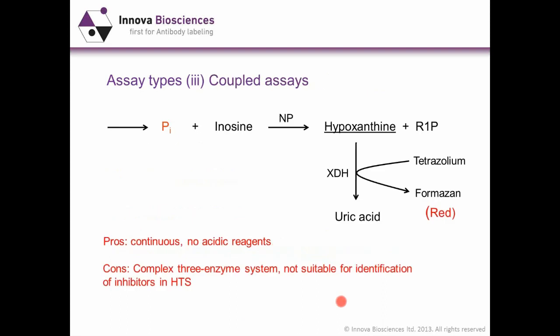The third assay type is coupled assays. Phosphate is generated from a reaction, then reacted with another molecule — for example, inosine, which is converted by nucleoside phosphorylase to hypoxanthine, which in turn is converted into uric acid. Concomitantly, tetrazolium salt is converted into formazan, which is red. The pros of this assay are that it's continuous — you could put all components in a single cuvette and see color development in real time — and there are no acidic reagents. The cons: it's a very complex three-enzyme system, so it's not suitable for high-throughput screening because there are three potential targets.